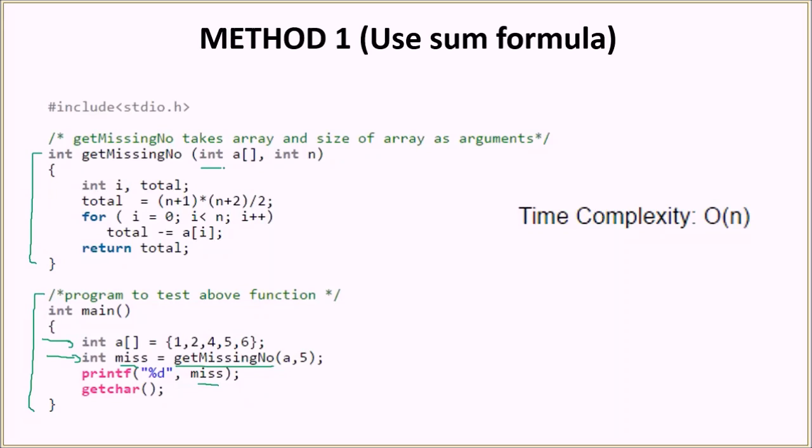It takes as an argument the array and the array size. Note that the n is the current size of the array. But after we include the missing element, the size will be n plus 1. So that is why when we are calculating total in our code, we are actually not using n into n plus 1 by 2. We are incrementing the value of n by 1.